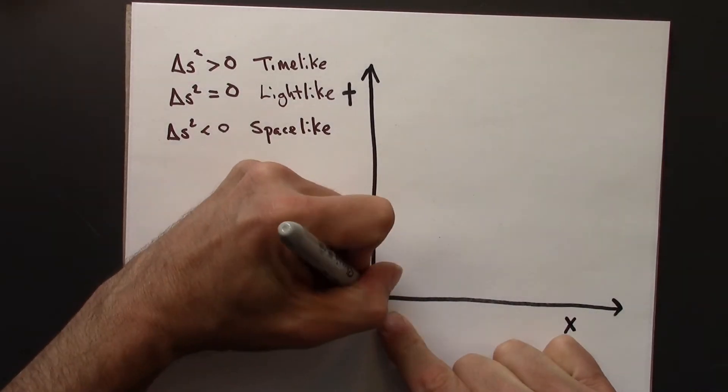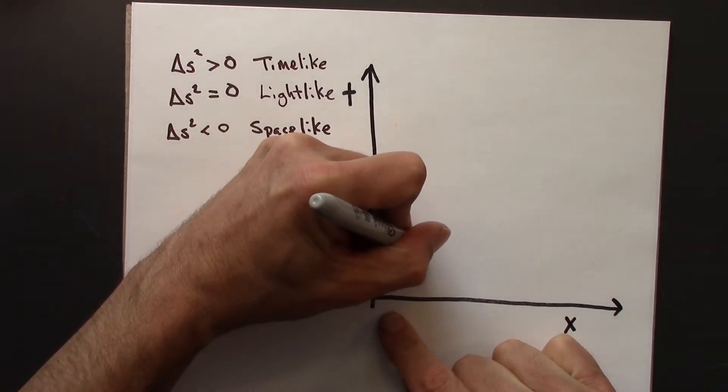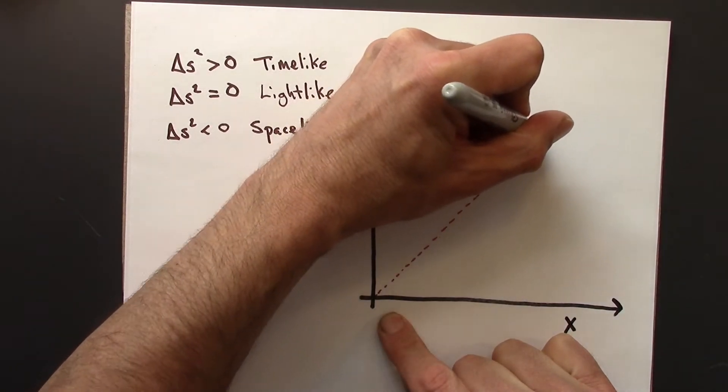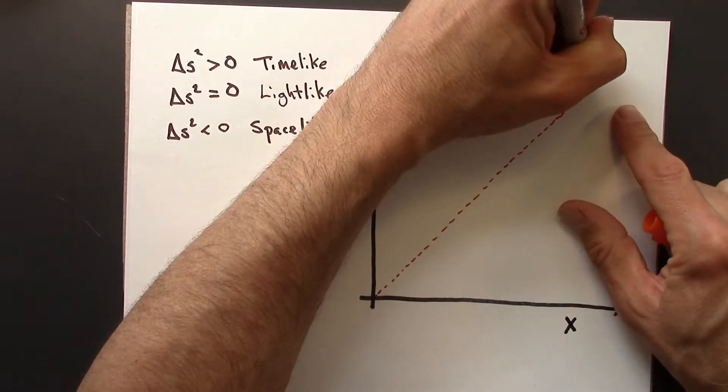And then a light flash that originated at the origin would head out like this. This is a light flash.